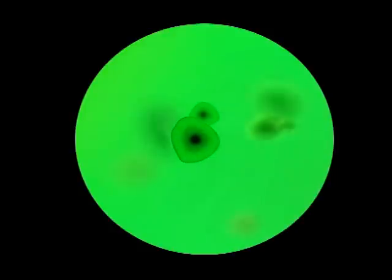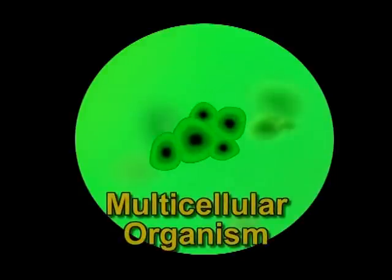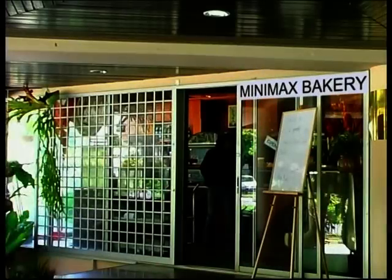An organism that is built of more than a single cell is called a multicellular organism. There are a lot of multicellular organisms around us. Most of them are big enough to be seen. Now, let's take a look at some of the unicellular organisms around us.